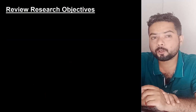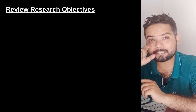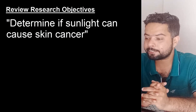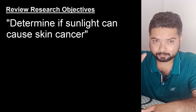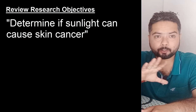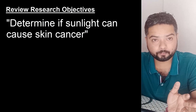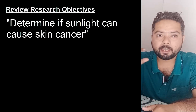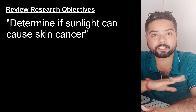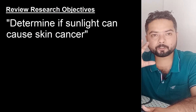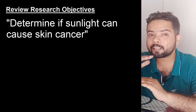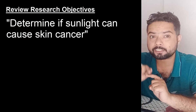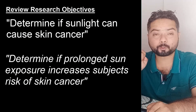Now let's evaluate some research objectives and improve them. The first objective to review is: 'determine if sunlight can cause cancer.' This is very vague — it doesn't specify which type of cancer, which population group, or any other detail. Any researcher cannot take every age group into account, and it's unclear which type of cancer is being discussed. We will refine it using the same action verb.